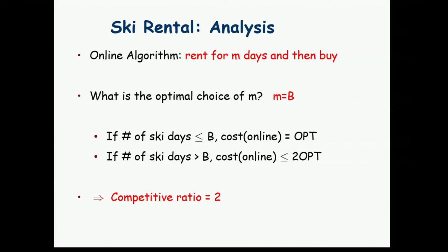For a deterministic algorithm, the approach is simple: we rent for a certain number of days and then we buy. The optimal choice of M — the number of rental days — is B. If the number of ski days is less than B, we do the same as the optimal solution. If it's more than B, we've accumulated enough credit to pay for both the rental and buying, which together costs 2B. Since any algorithm had to pay at least B, the competitive ratio is 2, and this is actually optimal.